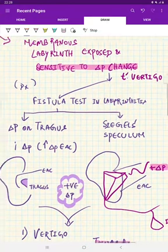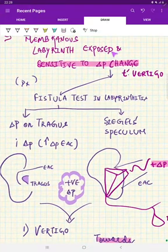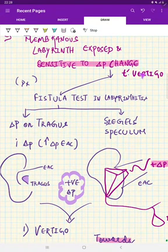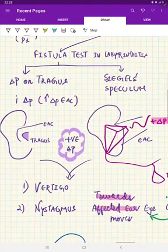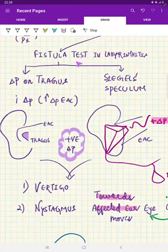Now, what if the membranous labyrinth is exposed? As it is getting exposed, it is very sensitive to pressure. Patient presents with transient vertigo. Now, we are going to test this transient vertigo. How do we do it? We do a test called fistula test.